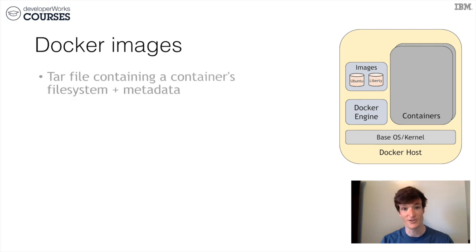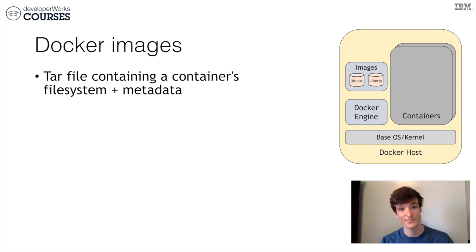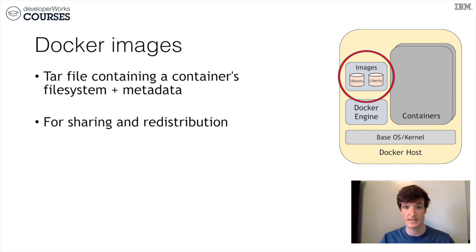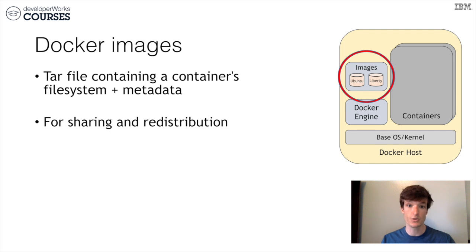A Docker image is a tar file, or an archive of the file system of the container. We create images so that we can share and distribute them across other users and environments. Once we have an image downloaded to our host, we can create new containers from it. Many containers can be created from a single image. When we ran Docker run commands in Lab 1, the very first step was to download the images from Docker Hub and then run the container. Note that this download only happens the first time — subsequent Docker run commands on the same image will locate the cached image on the host and skip the download.